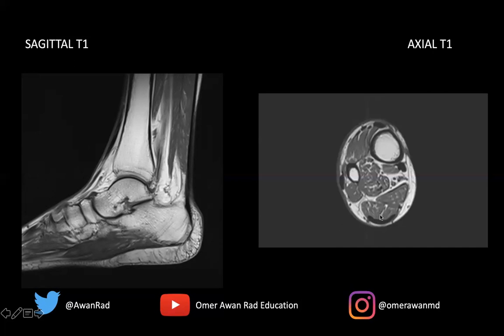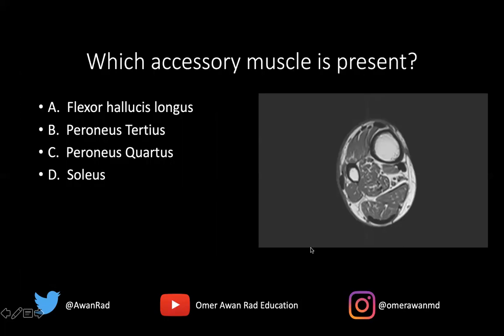On the axial image, we're very far inferior — past the tibiofibular syndesmosis and the interosseous membrane — and we still see a very prominent soleus muscle. So this is an accessory soleus muscle.